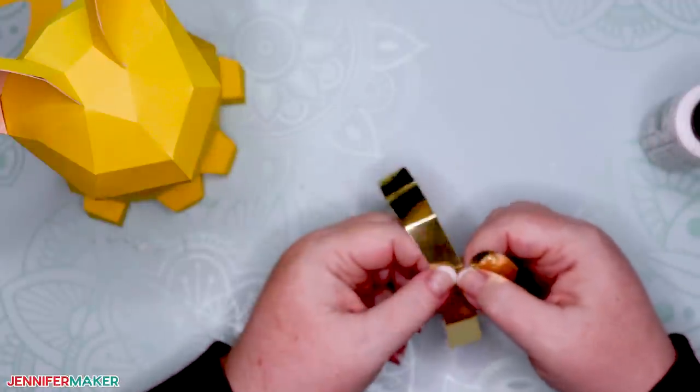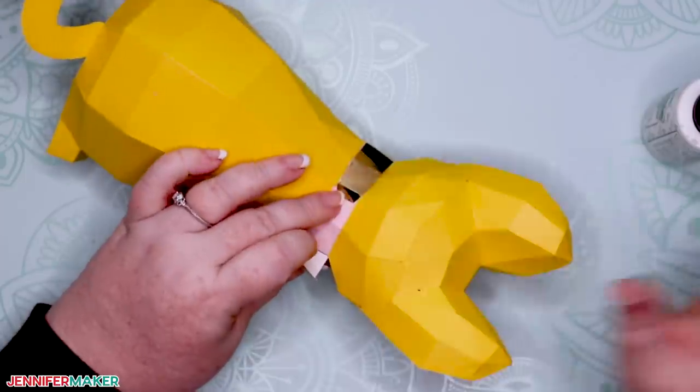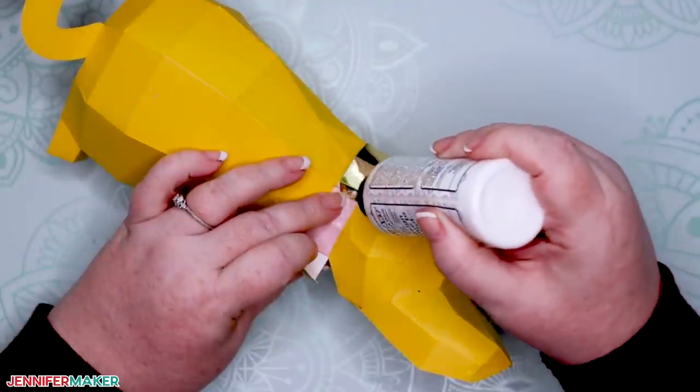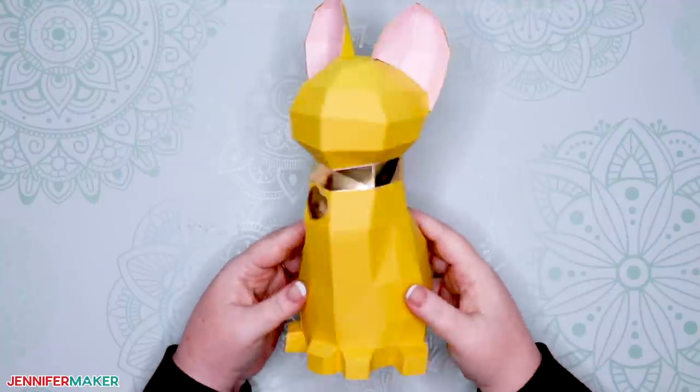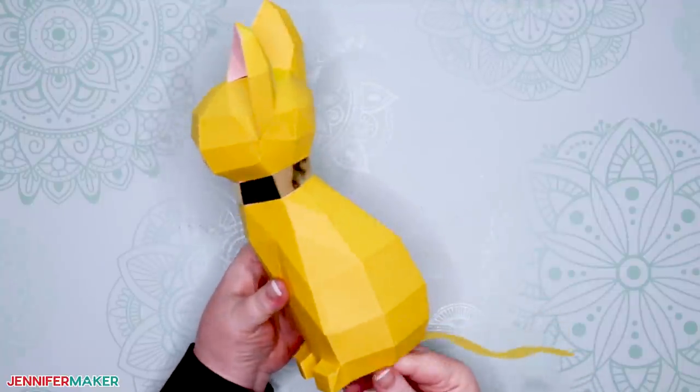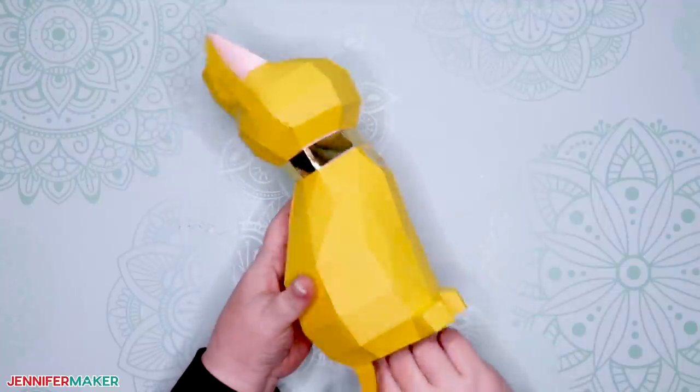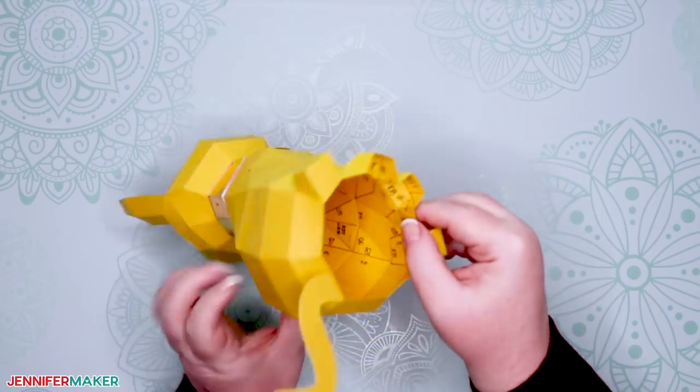Step five, show it off. Your amazing 3D paper craft cat is finished. And all of your numbers are hidden inside the cat, which I think is really cool.